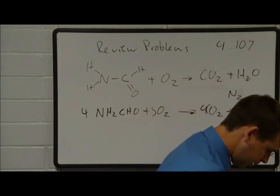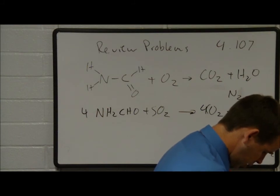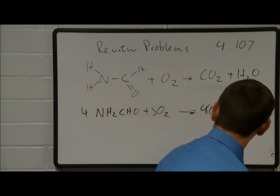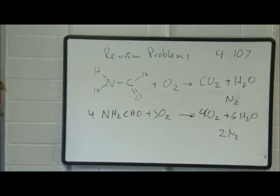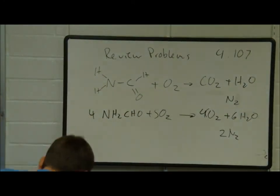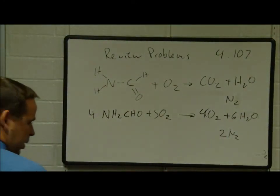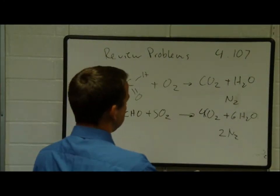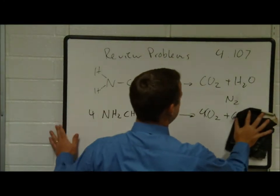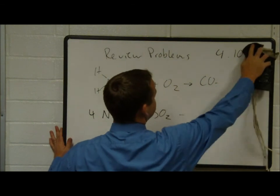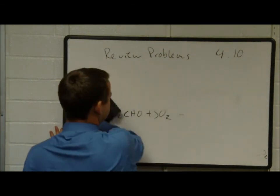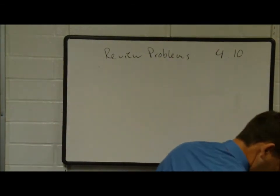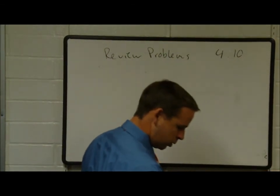Verifying: 4 carbons, 4 carbons; 1 nitrogen×4=4 nitrogens, giving 2 N2; oxygens on left: 4×1 + 5×2 = 14; on right: 4×2 + 6×1 = 14. That checks out.